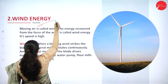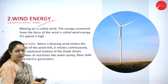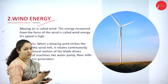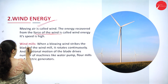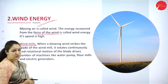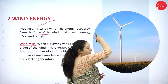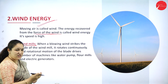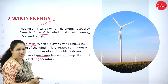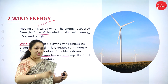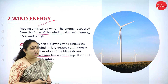Next is wind energy. The energy recovered from the force of moving air is called wind energy. Wind energy devices are of two types: windmills and wind farms. In a windmill, when the wind blows the blades start rotating, and this rotation is connected to machines like water pumps, flour mills, or electric generators, converting the mechanical energy of the moving blades into electrical energy.